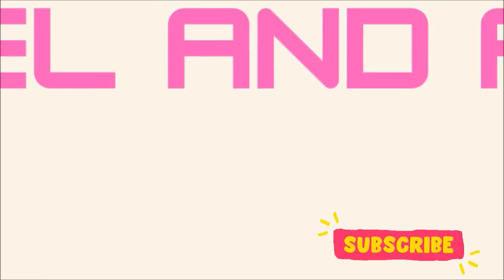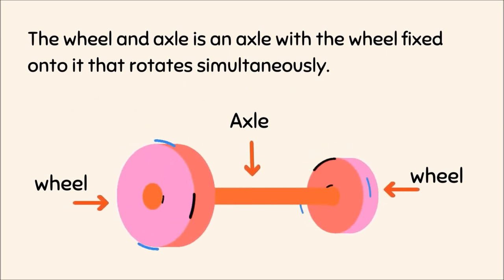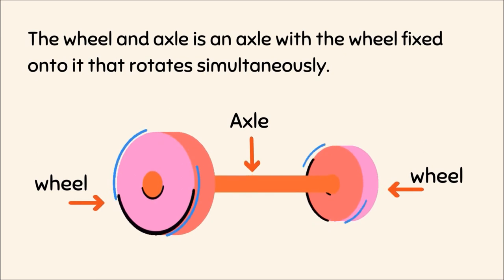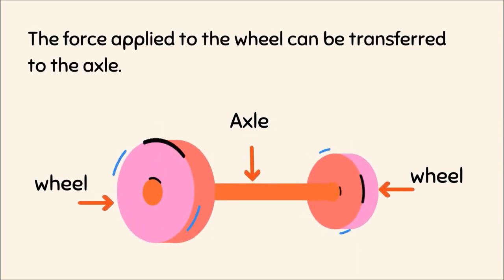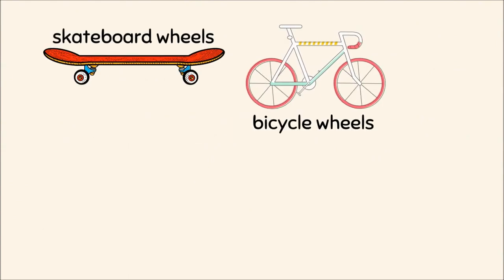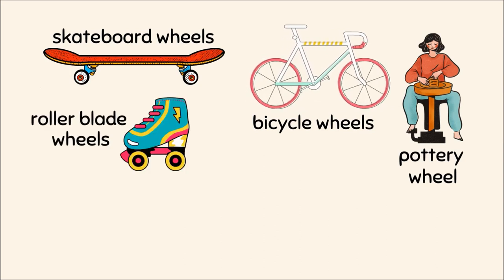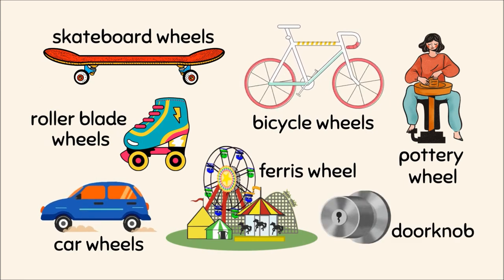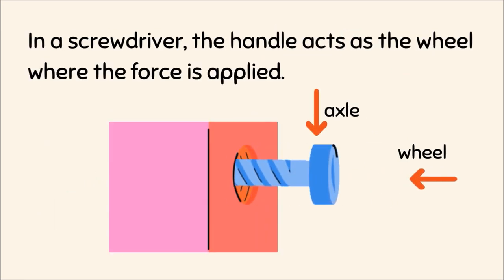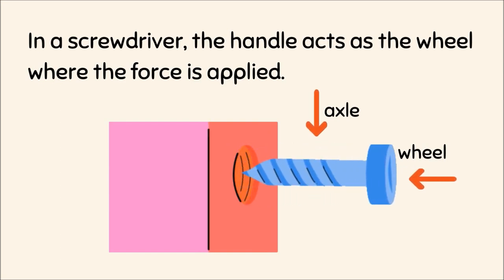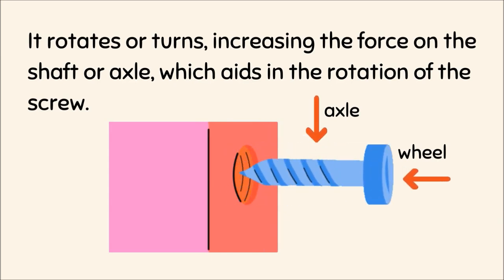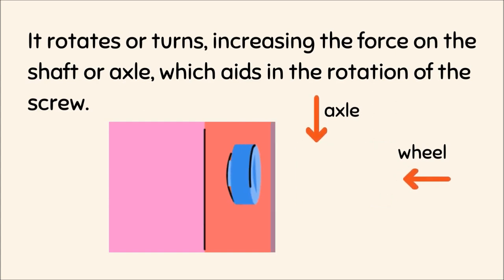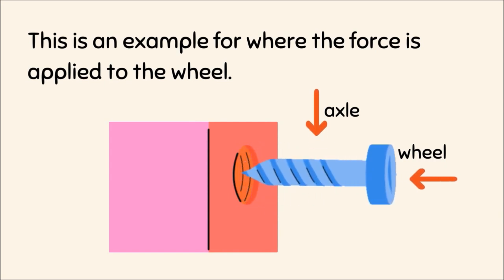Wheel and axle — the wheel and axle is an axle with the wheel fixed onto it that rotates simultaneously. The wheel and axle rotate together to transmit force; the force applied to the wheel can be transferred to the axle. Examples of wheel and axle: skateboard wheels, bicycle wheels, pottery wheel, roller blade wheels, car wheels, Ferris wheel, and doorknob. A screwdriver is another example: the handle acts as the wheel where force is applied, rotating and increasing force on the shaft or axle, which aids in the rotation of the screw.